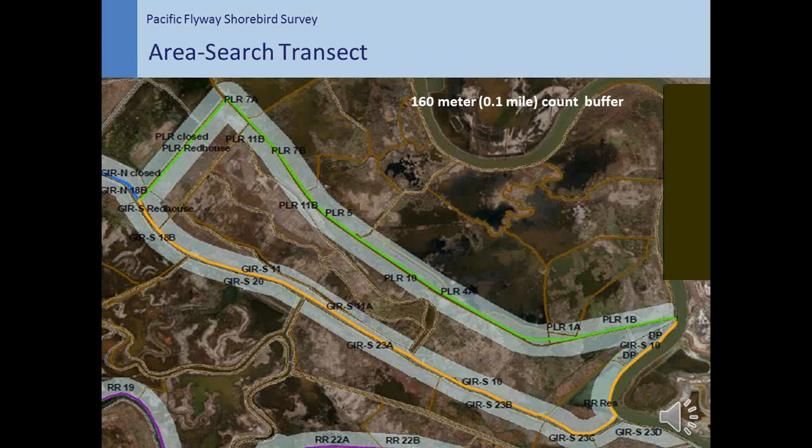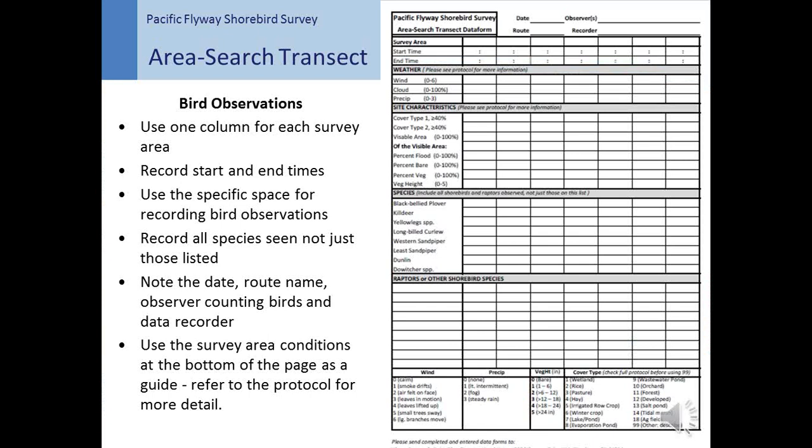The next type of survey is the area search transect. These surveys are generally conducted along roads within managed wetlands. Each area search transect consists of a series of specific areas, where each survey area extends from the road into a wetland unit 0.1 miles or 160 meters. Please refer to your specific road transect map and narrative for information about your route. At each survey area, observers count all shorebirds and raptors within 0.1 miles or 160 meters of the road and record survey area conditions. In contrast to the point count transect, observers are able to and encouraged to move around to obtain the best view into the wetland unit. The datasheet for the area search transect is very similar to the point count transect, with one column for each survey area along the transect.